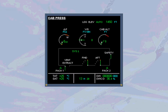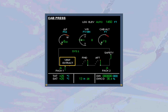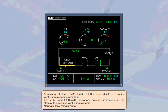A section of the ECAM CAB PRESS page displays avionics ventilation system information. The VENT and EXTRACT indications provide information on the state of the avionics ventilation systems. Normally they remain white.